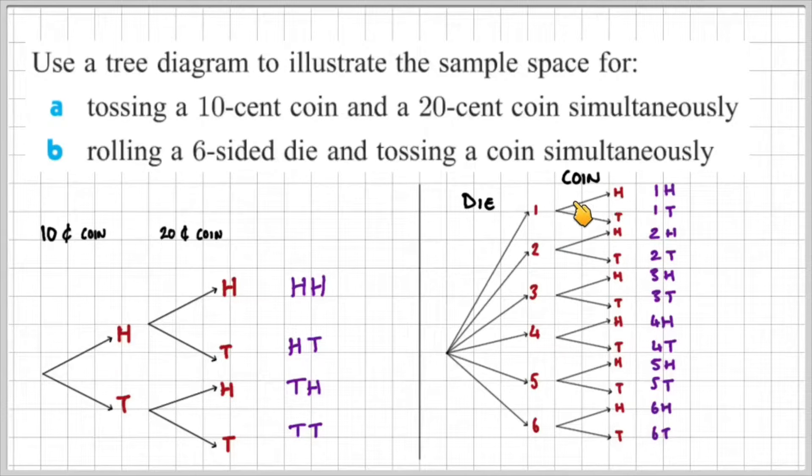Now if we follow each path, we can find the total possible outcomes which are going to be one and heads or one and tails, two and heads, two and tails and all the way down to six and heads and six and tails. If you count these, there's a total of 12 possible outcomes when rolling a six-sided die and tossing a coin simultaneously.